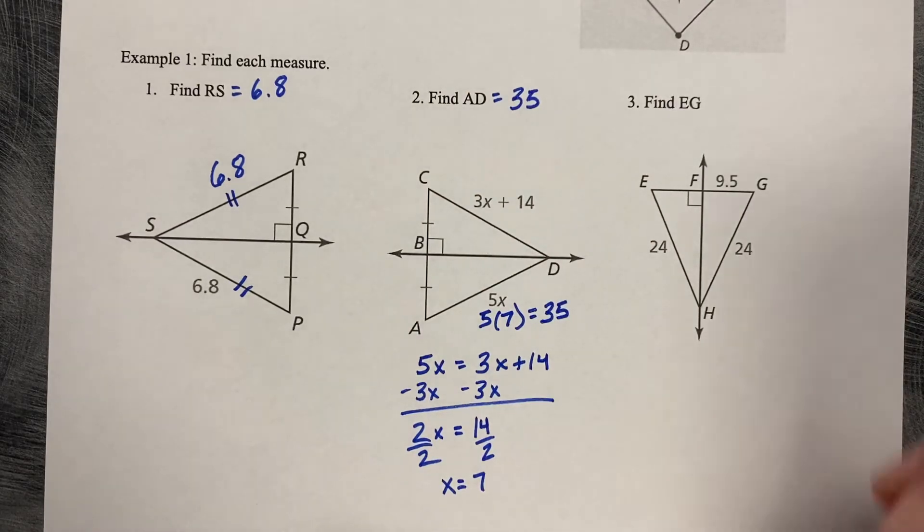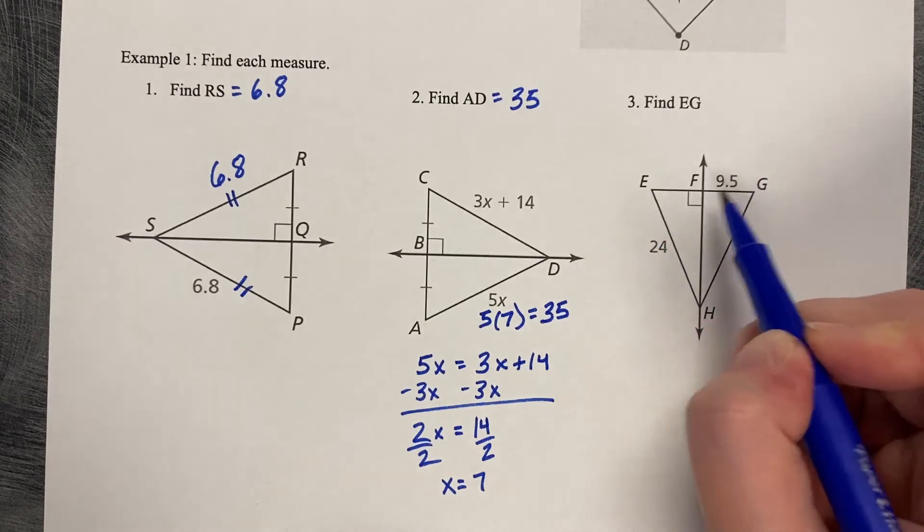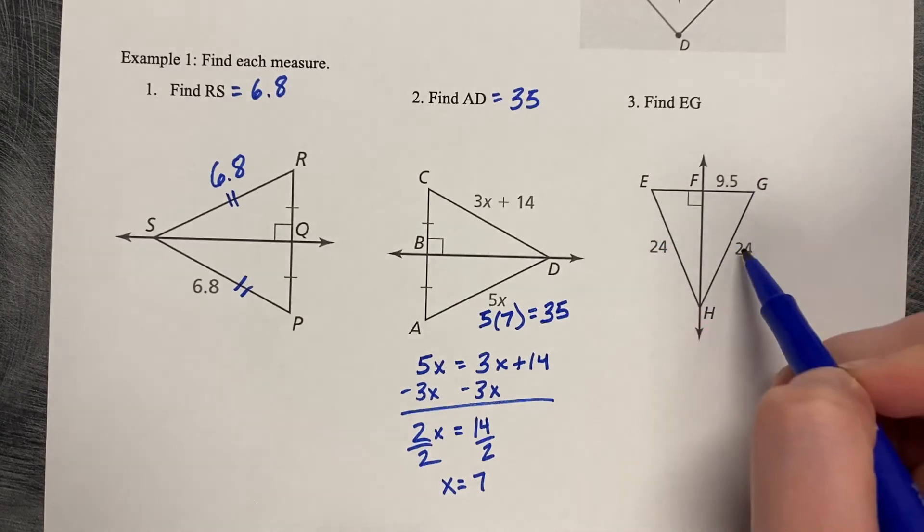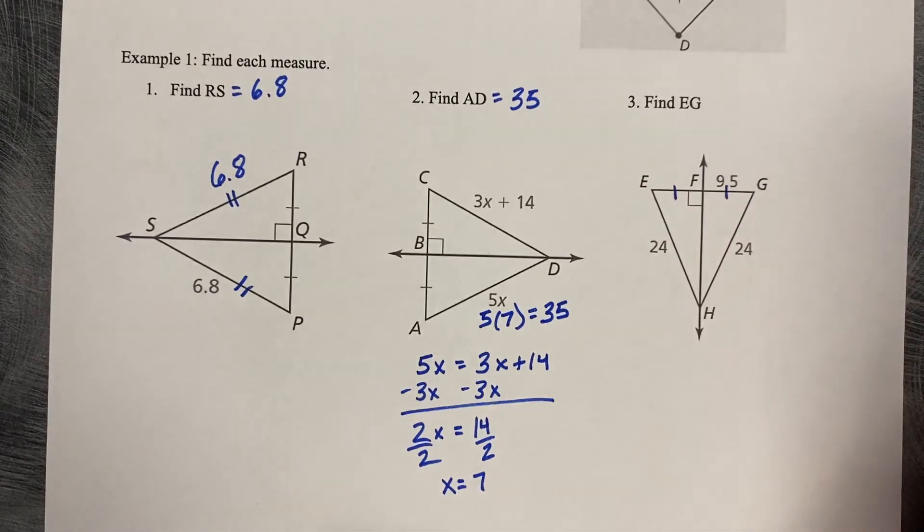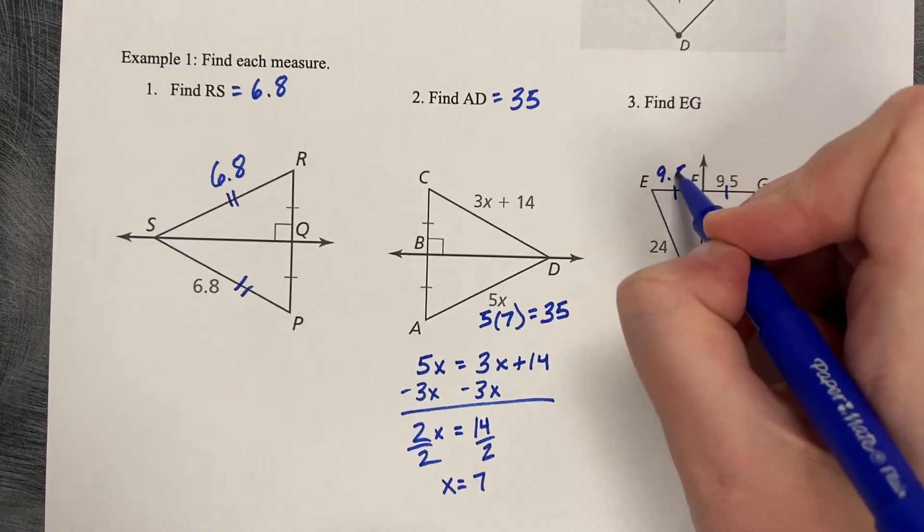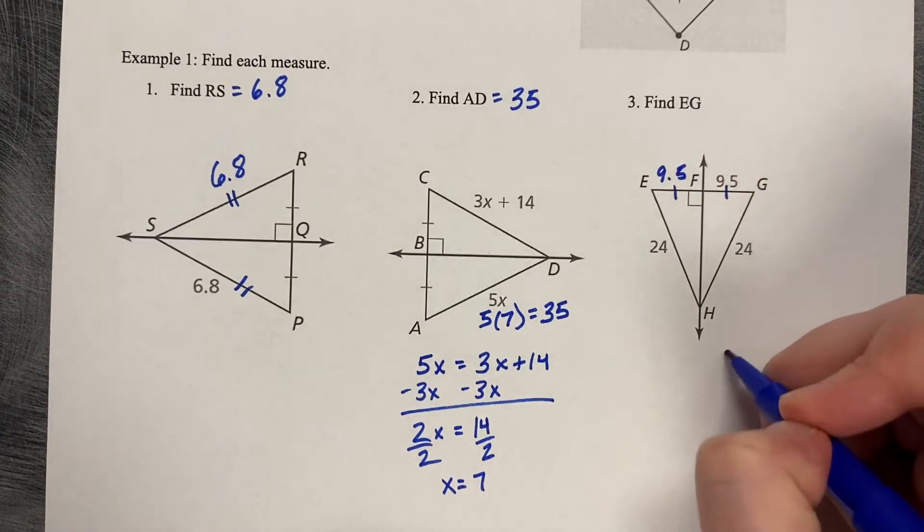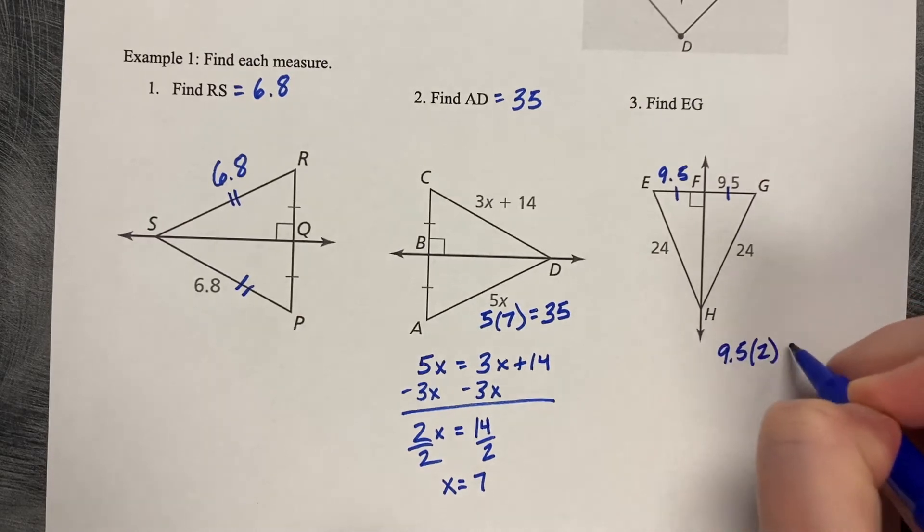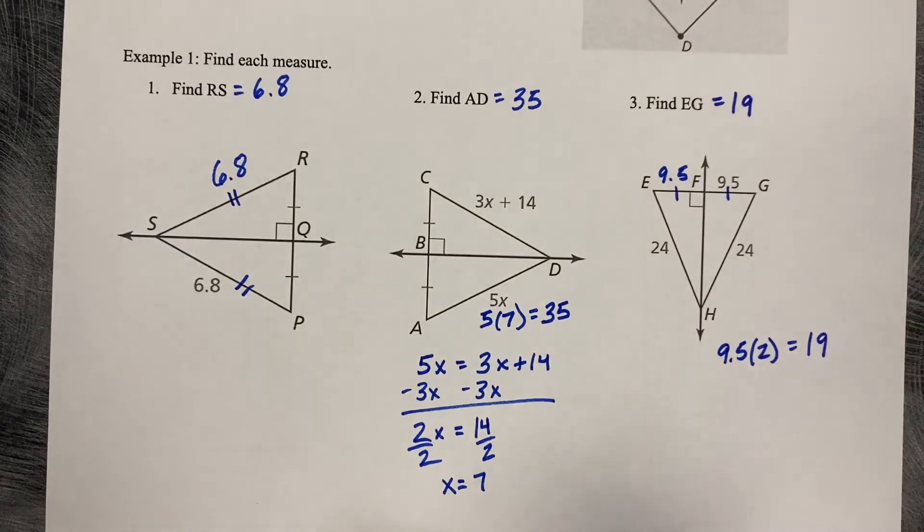Last one. We'd like to know EG. So that's that whole length across the top here. This is a perpendicular. I know that these two lengths are the same, which means that FG must also be the same length as EF, which means that both of those lengths are 9.5. So 9.5 times 2 is 19. So EG is 19.